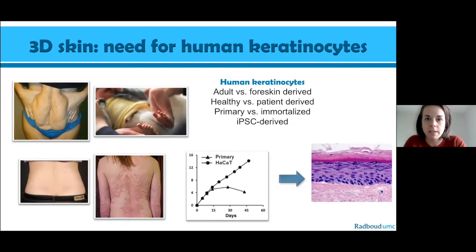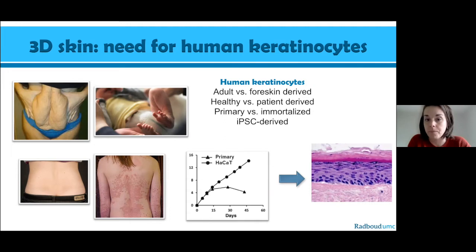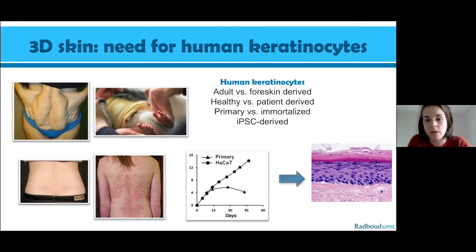To make human epidermal models, we need human keratinocytes, and different options exist. Adult human keratinocytes typically come from plastic surgery surplus material like abdominal plastics or breast reductions. There is also a large supply from juvenile skin from foreskin excisions. One can use healthy keratinocytes or make organotypic models from specific patient cells — for example, from atopic dermatitis, psoriasis, or other skin disease patients — to faithfully mimic the patient's condition.